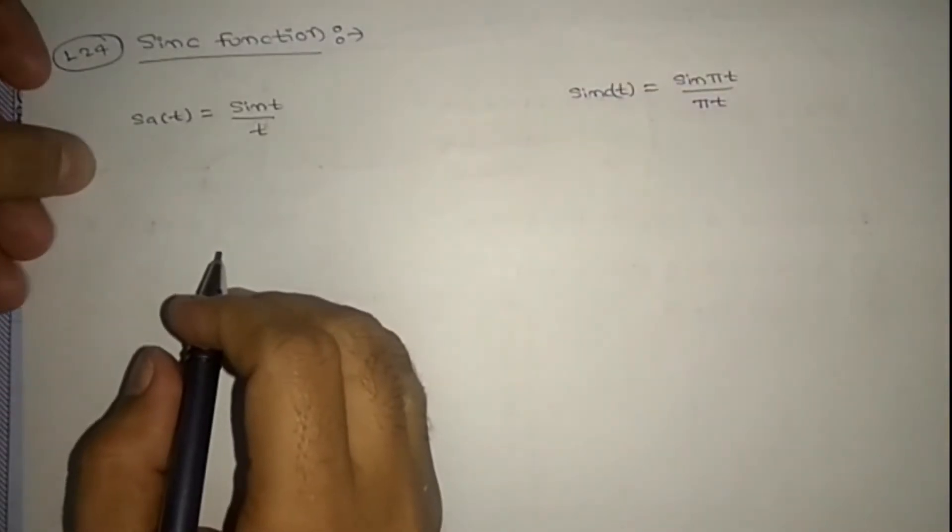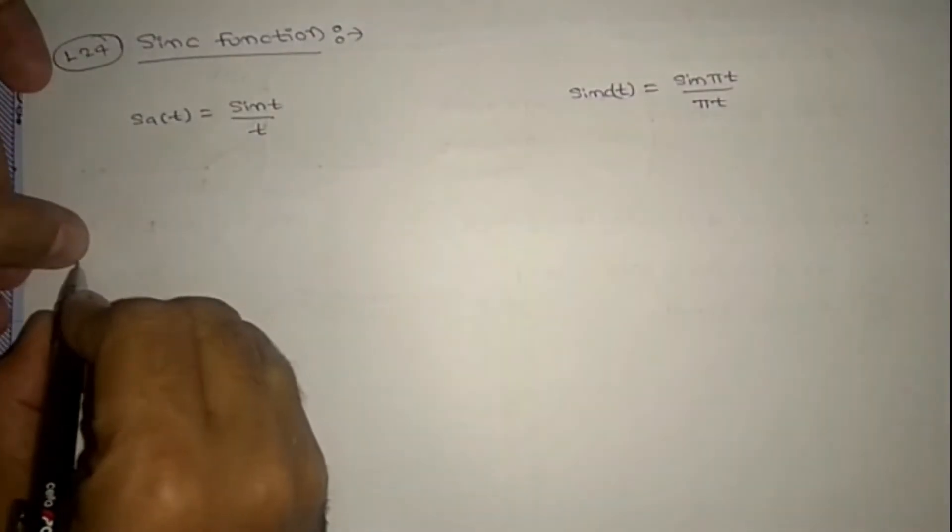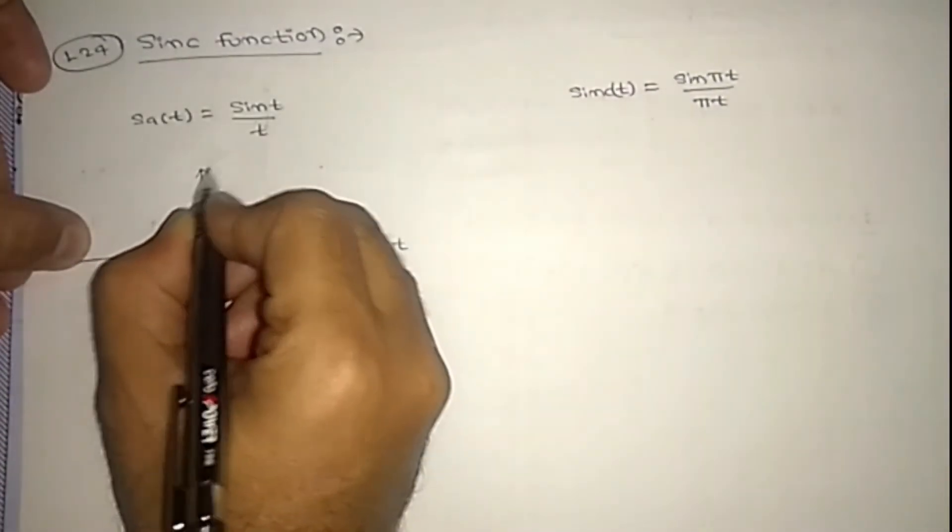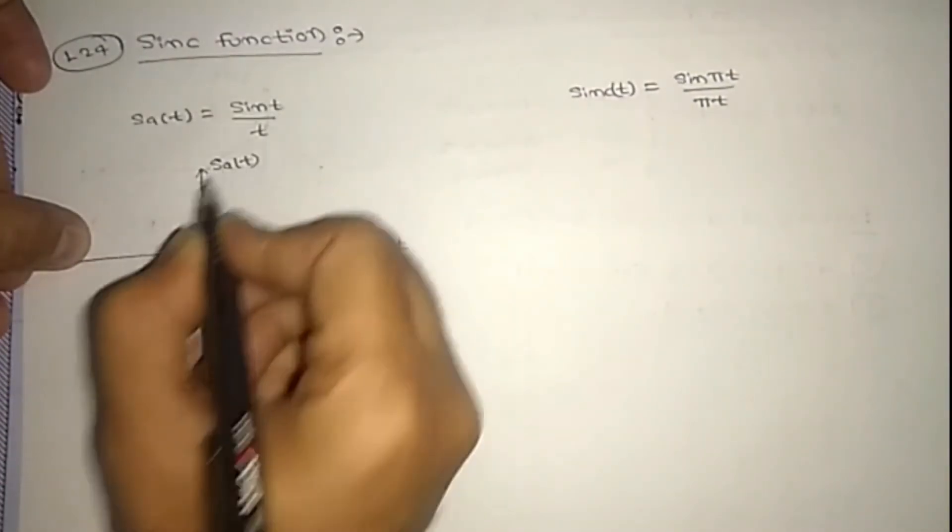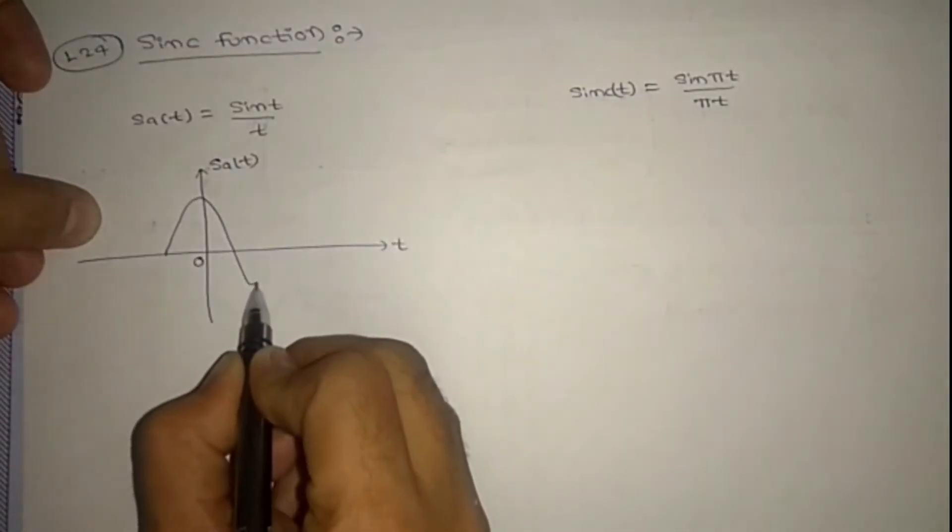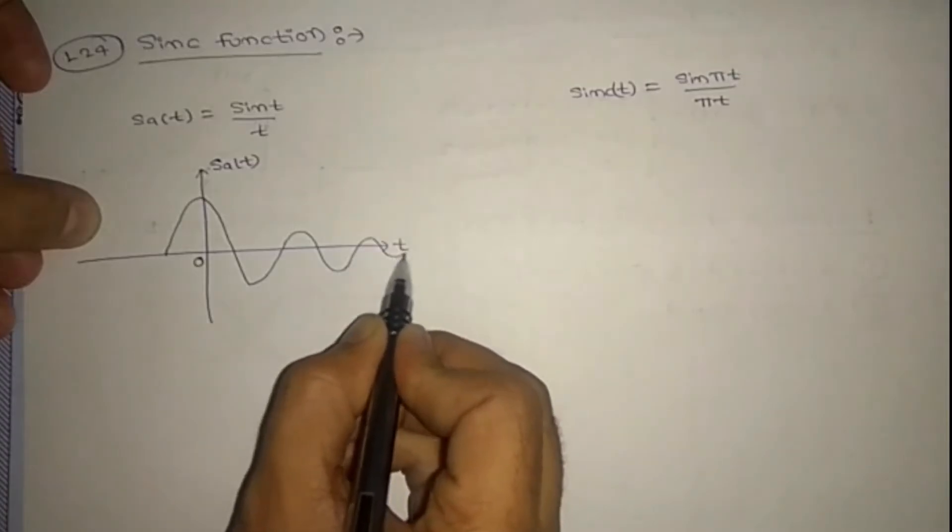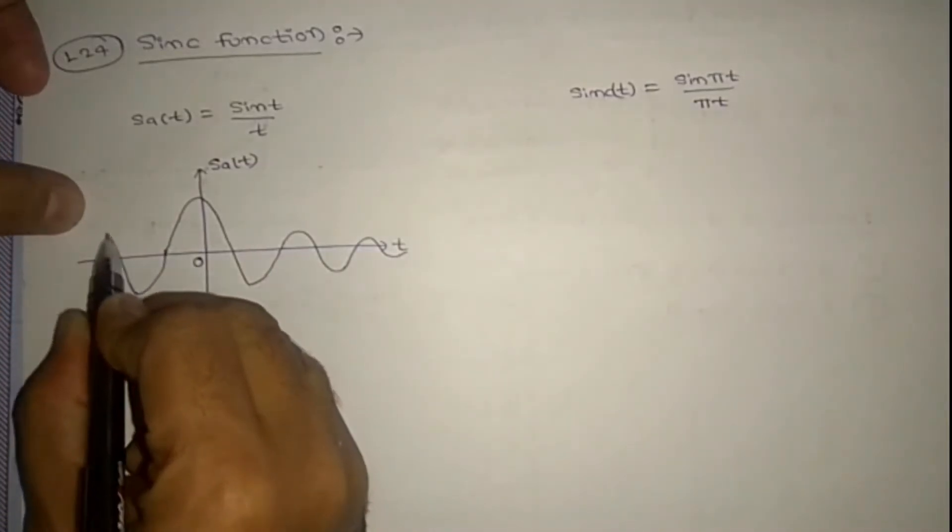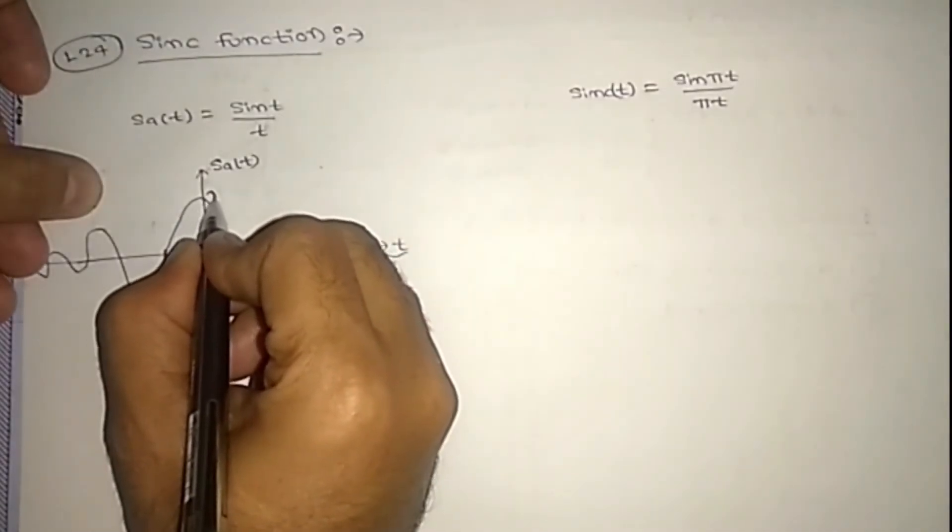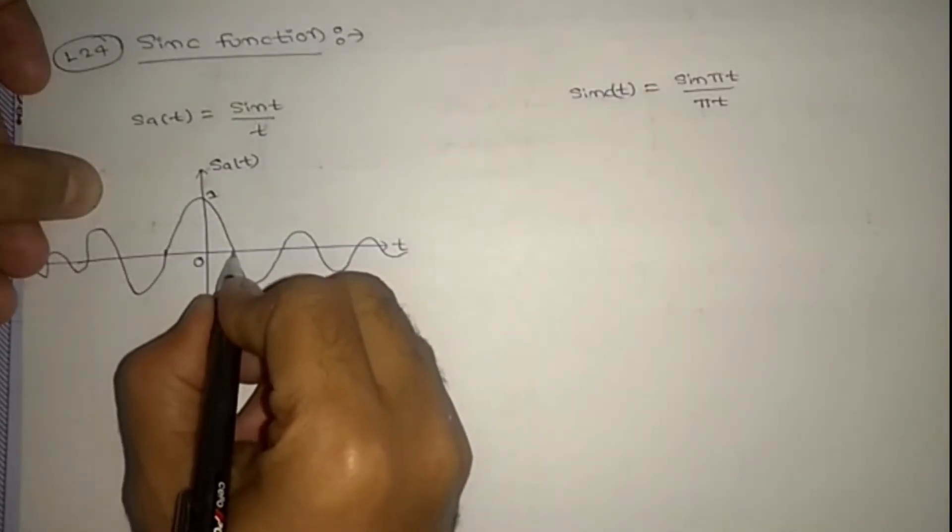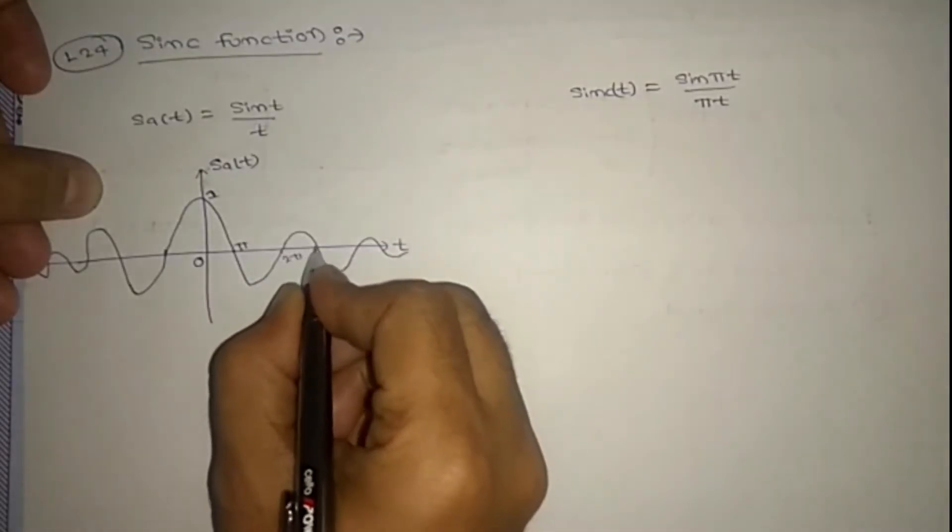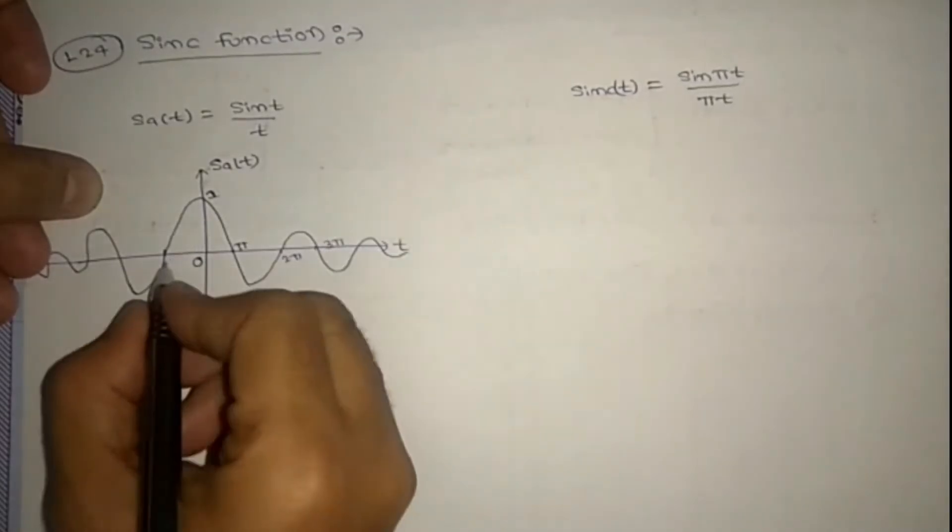So what is the difference between these two? If I draw this one, this is sa(t). The signal is the same, it will be like this. Here it is one, and it will be here points are pi, 2 pi, 3 pi, and so on.